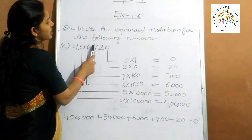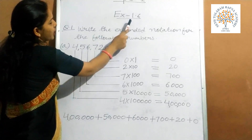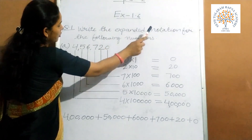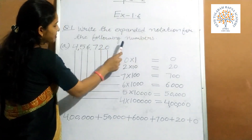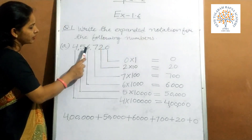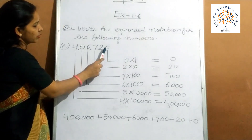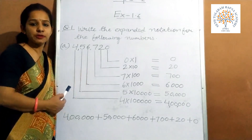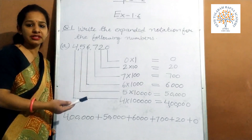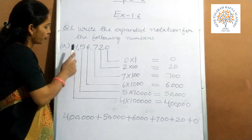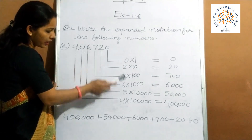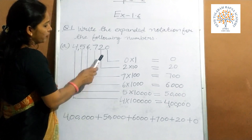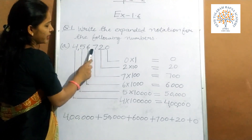Now we are going to start exercise 1.6, question number 1: write the expanded notation for the following numbers. Part a is 4,56,720. We have to expand this number. Children, what is the meaning of expanded form? Expansion means we write the place value of different digits and then add them — this is called the expanded form. So first of all we need to find the place value of different digits.